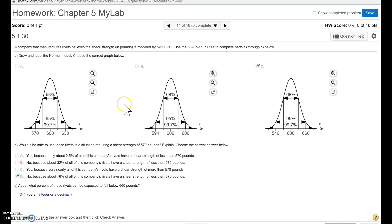Let's finish the question. Just to remind you, we have rivets, their shear strength is modeled by a normal curve, mean is 600, standard deviation is 30. We want to know what percent of these rivets can be expected to fall below 660 pounds. In other words, what percentage of the rivets have a shear strength that is less than 660 pounds. So I started drawing.